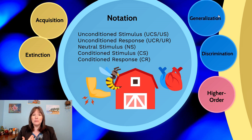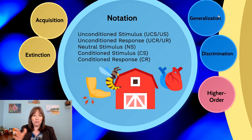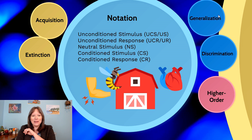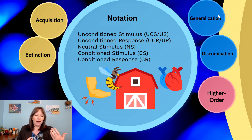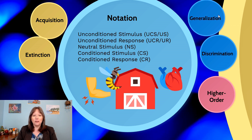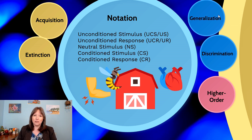That response is now a conditioned response (CR). In the dog example, this would be drooling to the bell alone, which may not be the exact same drooling pattern as with meat. In the wasp example, it's unlikely you'll feel pain shooting through your elbow, but the conditioned response could be panic or fear, increased heart rate, increased breathing rate, or eye dilation. The unconditioned response to the wasp sting and the conditioned response to the visual of the wasp do not need to be identical — they are often similar but slightly different.